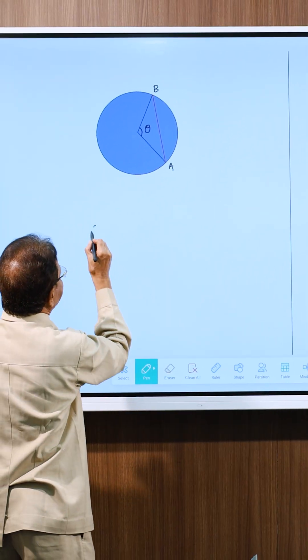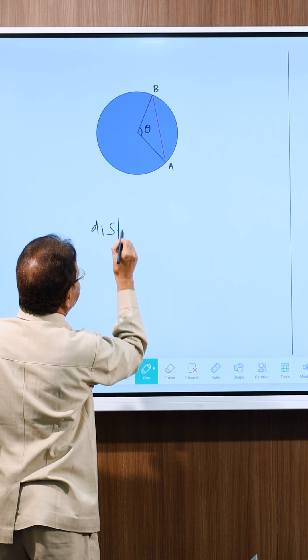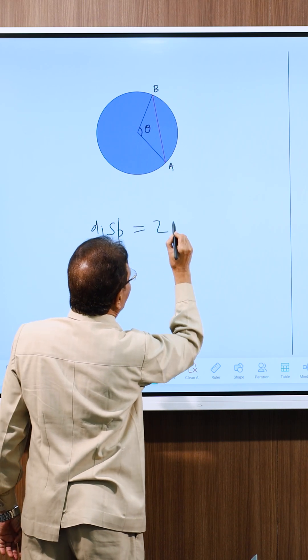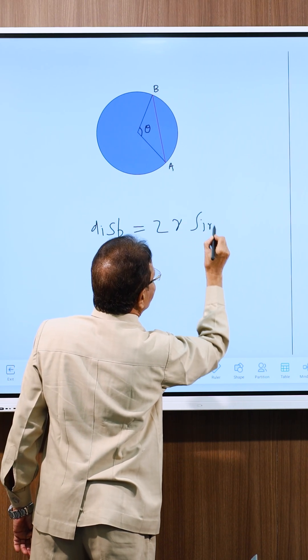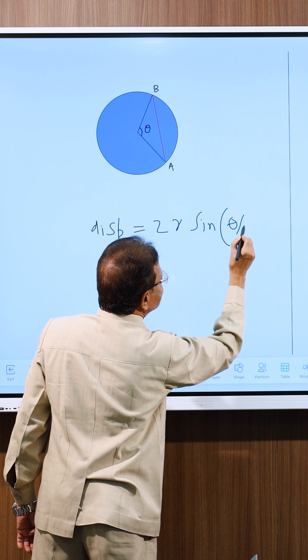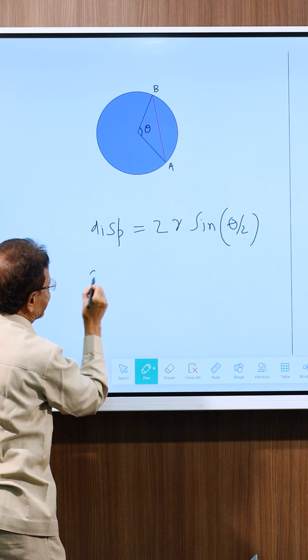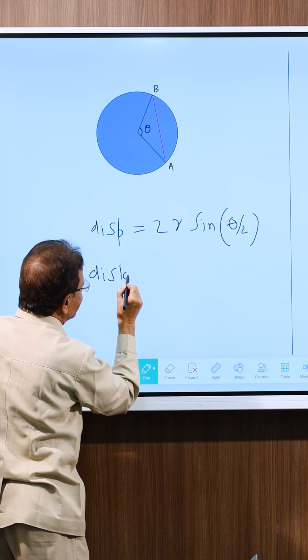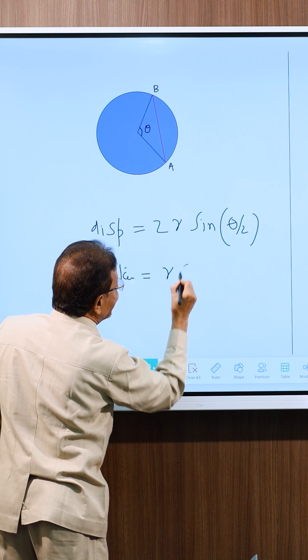Displacement is equal to 2R sine of theta by 2. And distance is equal to R into theta.